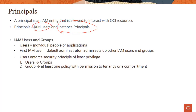Let's talk about IAM users and groups. Users are individual people — these can be applications also, but typically individual people. So a storage admin or a network admin who wants to use resources in OCI is a user. The first user in OCI is always the default administrator, and the default admin sets up other IAM users and groups.